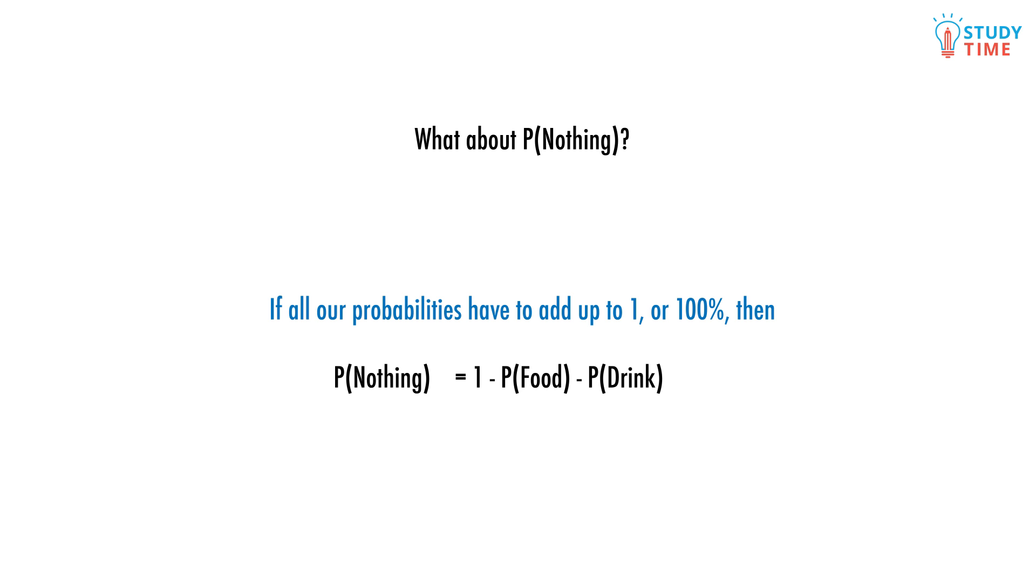So the probability of buying nothing is equal to 1 minus the probability of food minus the probability of drink equals 1 minus 0.4 minus 0.2 equals 0.4 or 40%. Notice how we didn't count our value for both food AND drink? If we did, we'd be counting it twice, which we don't want to do. This will become important with tree diagrams which you'll see later, when we might only want to count out AND probabilities.